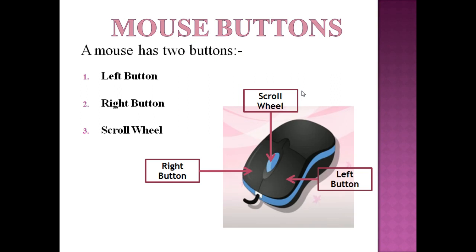Next, I will show you mouse buttons. Look at this mouse. It has two types of buttons. First is left button. Second is right button. And there is one scroll wheel.